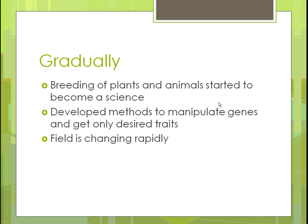Gradually they started getting more scientific, and scientists began using genetics to breed plants and animals. They looked at different traits and developed methods to change genes to get only the desired traits. There was always variability in what you'd get — not all calves would be strong and healthy — but they found ways to continuously improve. The field is changing tremendously in both plants and animals every year.